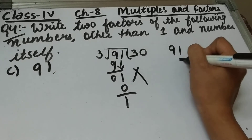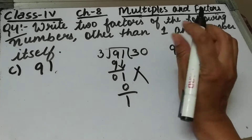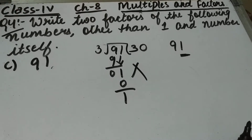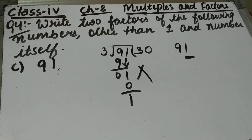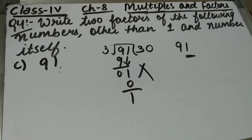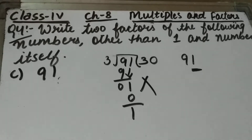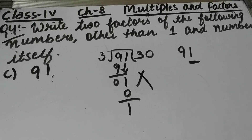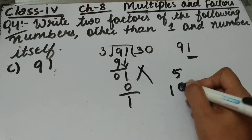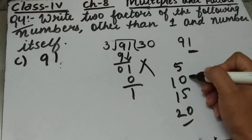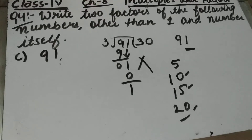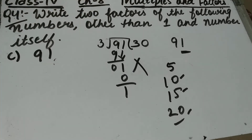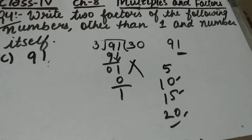91 is not divisible by 4 because it is an odd number, so 4 is not a factor of 91. Next, 5 — this is also not divisible by 5 because the 1's place is 1, and for a number to be divisible by 5 its 1's place should be 0 or 5. So 5 is not a factor of 91. Next comes 6 — 91 is not divisible by 6 either because it is an odd number.